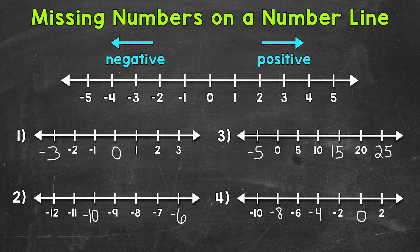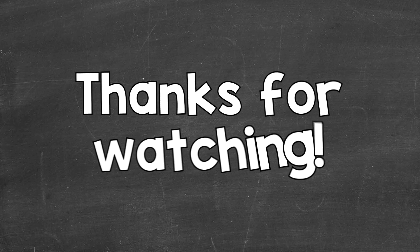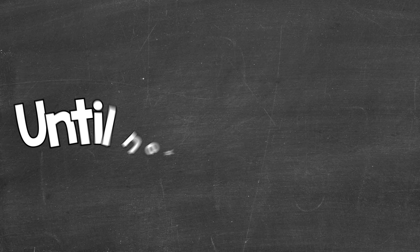We were able to use what we were given, even without consecutive numbers, and fill in those missing numbers. You can almost think of these like filling in a pattern — find the distance between the numbers on the number line, the intervals, and then apply that to the missing numbers by counting up or counting down. I hope that helped. Thanks so much for watching. Until next time, peace.